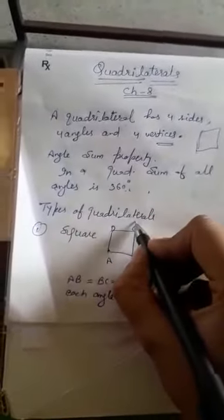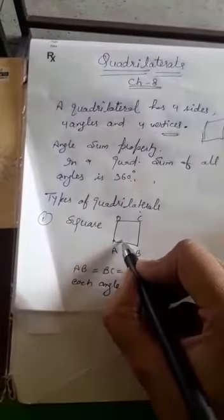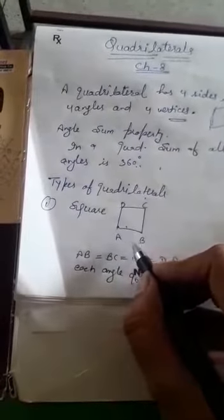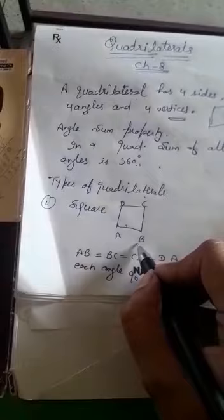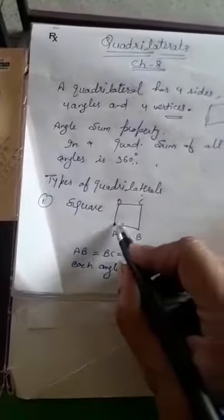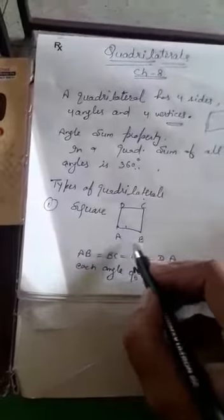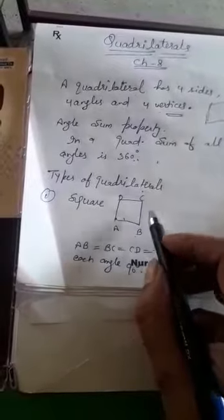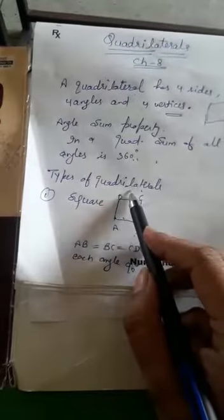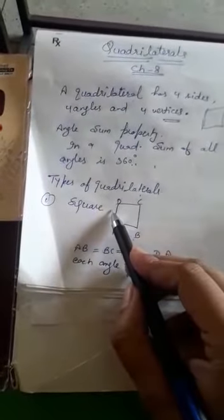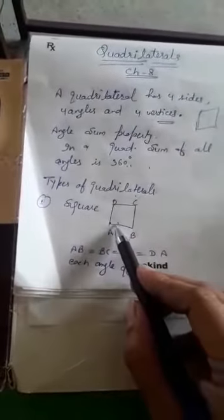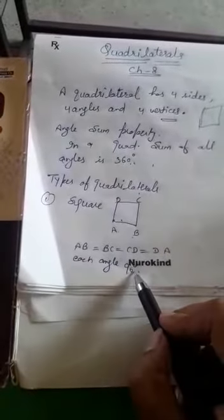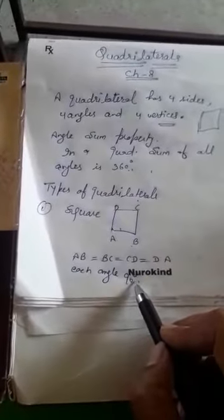Now, types of quadrilateral. First is a square. A square is a quadrilateral with all equal sides and each angle 90 degrees. ABCD is a square in which AB = BC = CD = DA, and each angle of ABCD is equal to 90 degrees.